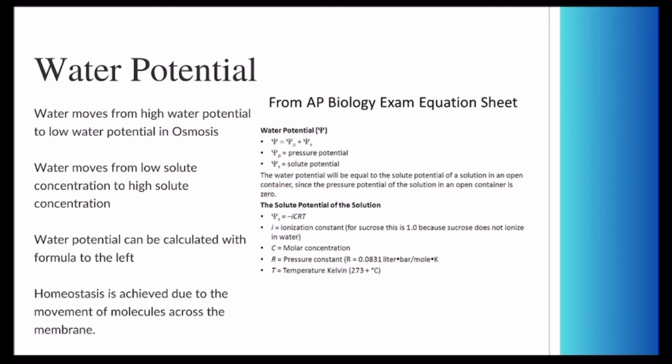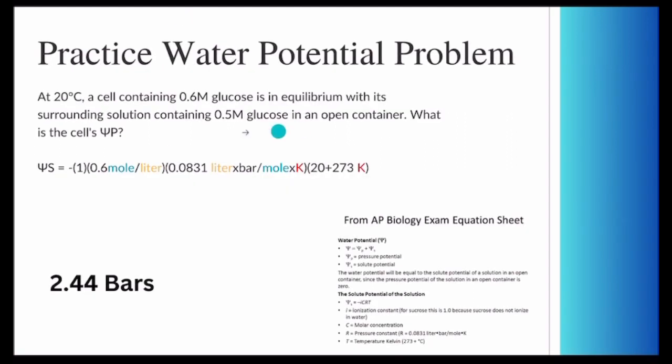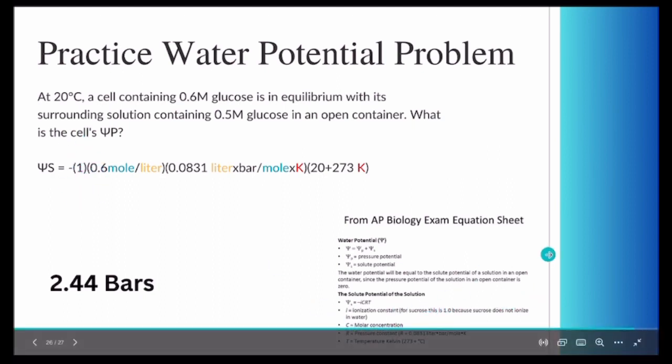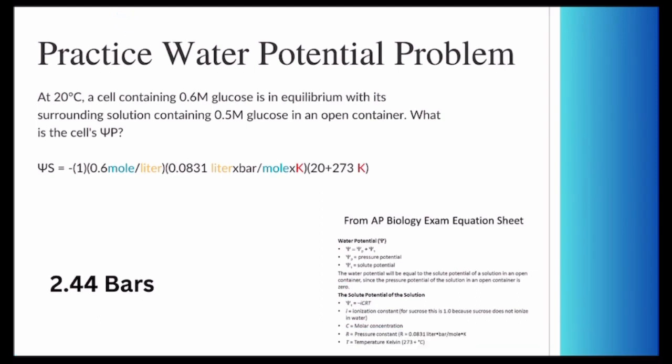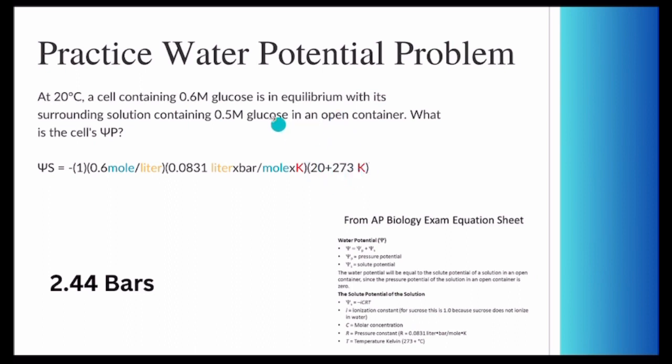This is water potential. This is an equation used for water potential. Water moves from a low solute concentration to a high solute concentration. Homeostasis is achieved due to the movement of molecules across the membrane. This is our water potential equation. This one is our ionization constant, and because it's sucrose, this is going to be one. This is our molar concentration, which is shown here. This is our pressure constant, which always remains the same. And this is our temperature in Kelvin, found by adding 273 to our temperature in Celsius.